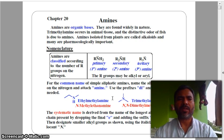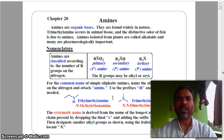Amines are classified according to the number of R groups on the nitrogen: primary amine, secondary amine, and tertiary amine. The R group may be alkyl or aryl. Primary amine is also known as 1°, secondary amine as 2°, and tertiary amine as 3°.